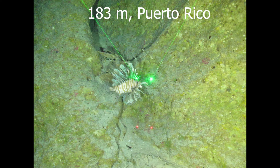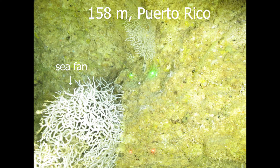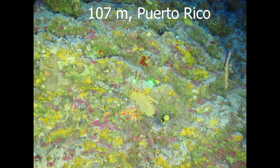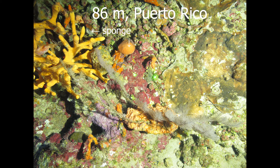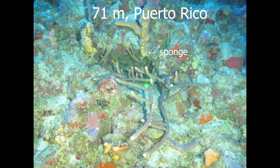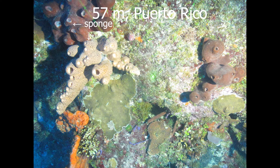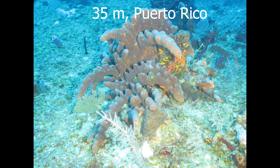Here are examples moving upward from deep to shallow. At 183 meters depth, with green and red laser points indicating a distance of 10 centimeters, invasive lionfish are present but the bottom is mostly exposed limestone. At 158 meters, there are some white sea fans. At 107 meters, we see encrusting sponges and pink encrusting algae. At 86 meters, branching sponges, encrusting algae of the dark and light pink kind, and reef-building corals. At 71 meters, even more branching sponges. At 57 meters, sponges, corals, and green seaweeds. And at 35 meters, the same with shallow water gorgonian species appearing as well.